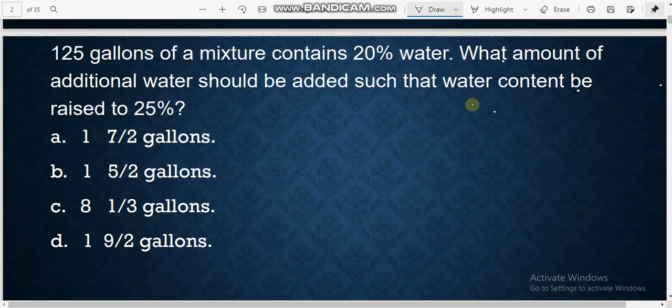We have this is our first mixture. So the first mixture we have 125 gallons and the percentage of water of this mixture is 20%. We are going to add this to the second mixture.